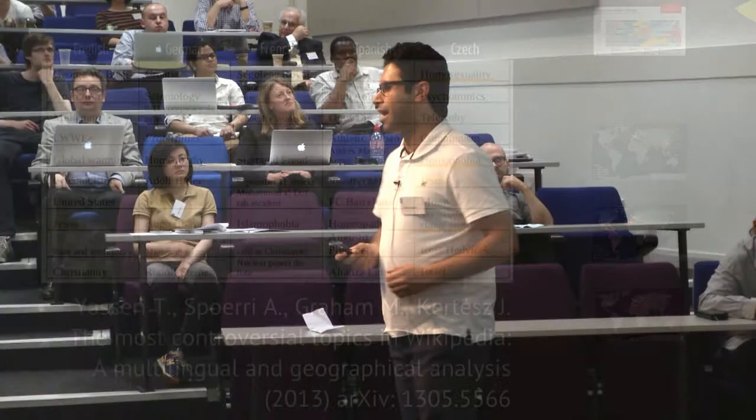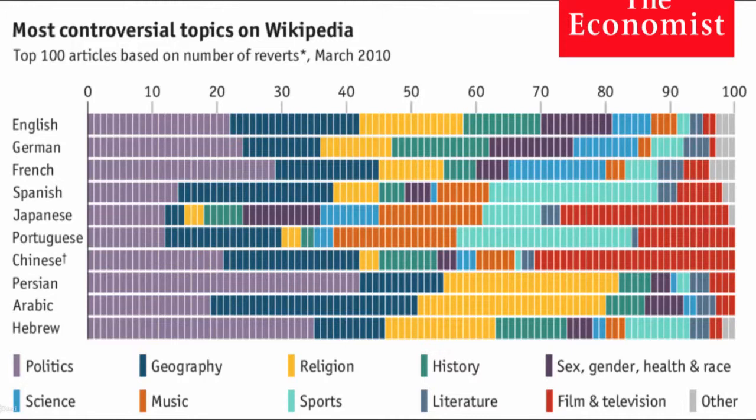We categorized the top 100 most controversial articles by topic for different language editions, and we were lucky to get coverage in The Economist. Each color corresponds to one category of articles. In Middle Eastern languages like Persian, Arabic, and Hebrew, politics is quite dominant among controversial topics. I mentioned sport in the case of Portuguese and Spanish. In Chinese and Japanese Wikipedia, you see a lot of discussion about film industry, television, high school music bands, manga, and those kinds of things.